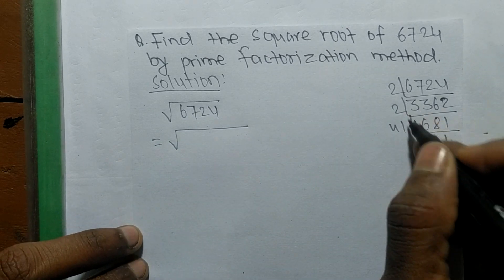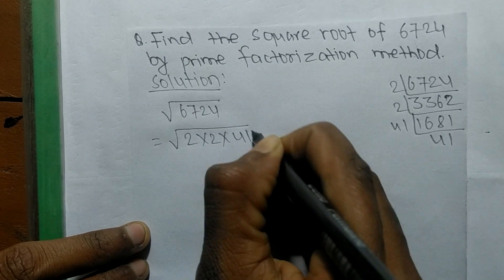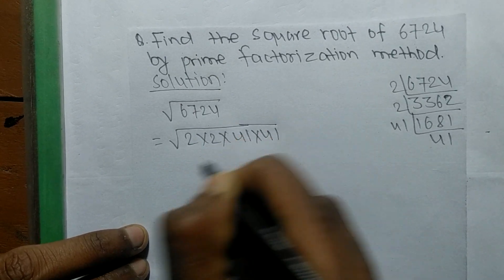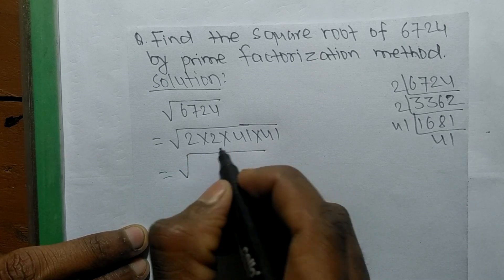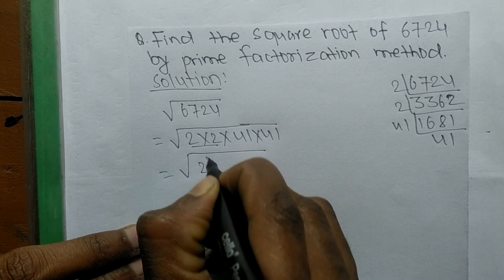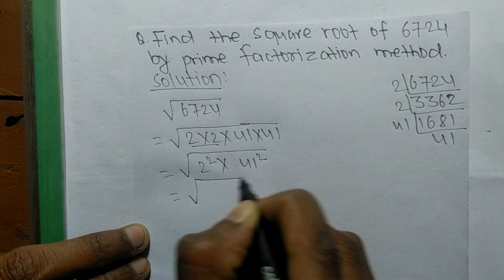Square root of 6724 equals... we write the prime factors from here: 2 into 2 into 41 into 41. Now we make squares of these prime factors: 2 squared and 41 squared.